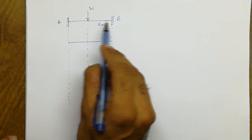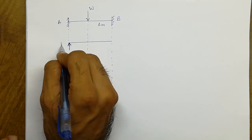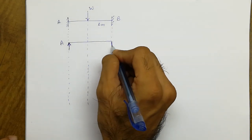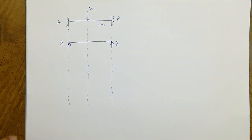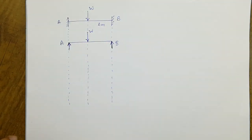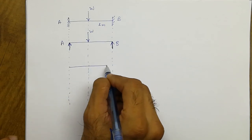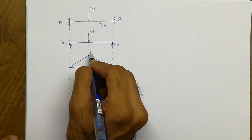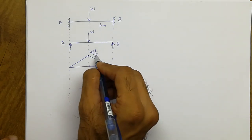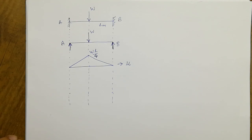We have a fixed beam with both supports fixed. Instead of this, suppose we consider support A as a simple support and similarly support B as a simple support — converting our fixed beam into a simple support beam subjected to load W at mid-span. Now you forget that you have a fixed beam. For the simple beam we can prepare the bending moment diagram, and the maximum coordinate is WL/4. This diagram is called the mu diagram.